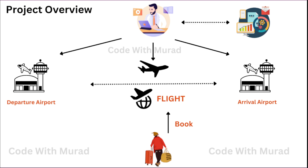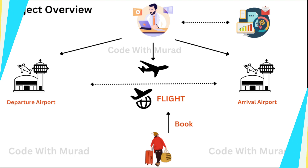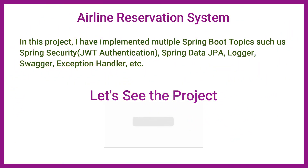Passengers will see complete flight details including departure airport, arrival airport, timing, and ticket prices for different classes like economy, business, or first class. Passengers can book flights by selecting the seat class. If seats are available, the booking is immediately confirmed. If seats are not available, the passenger goes into a waiting state, and if any customer with a confirmed ticket cancels, the waiting passenger gets confirmed immediately.